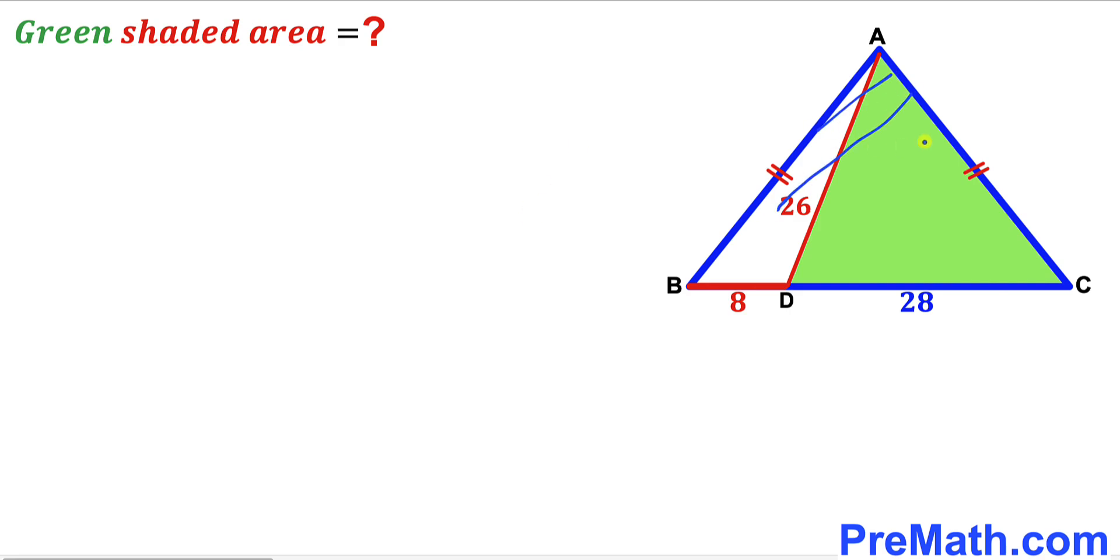Let's focus on triangle ABC. This is an isosceles triangle since this side length equals this side length. We can see that the whole side BC length is 8 plus 28, which gives us 36 units.